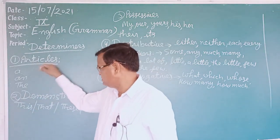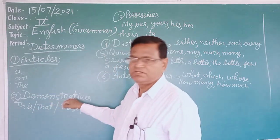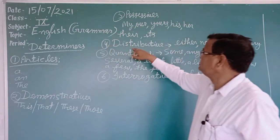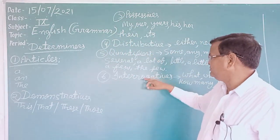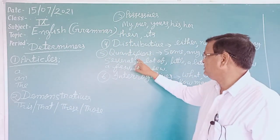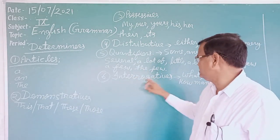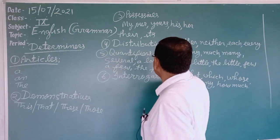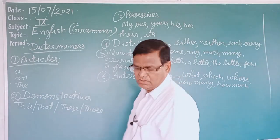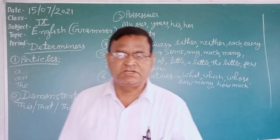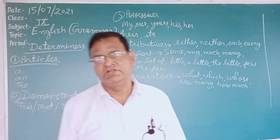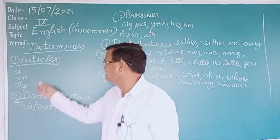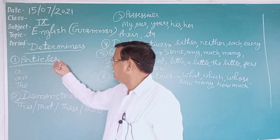First is articles, second is demonstratives, third is possessives, fourth is distributives, fifth is quantifiers, and sixth is interrogative determiners. Today we will discuss all these determiners. First of all, let's discuss articles.